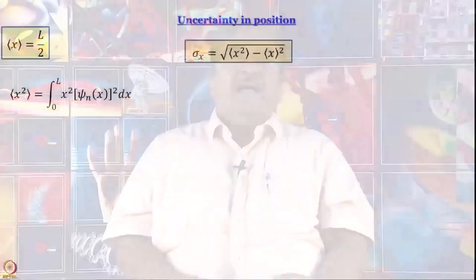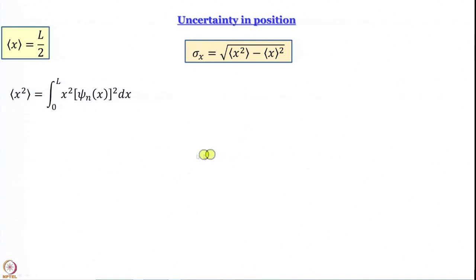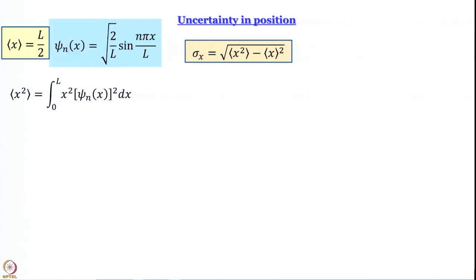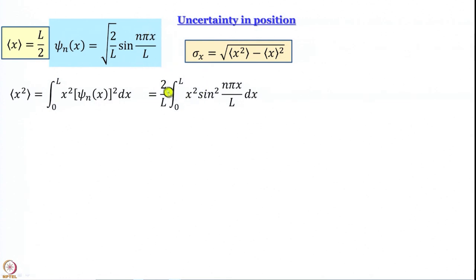So: ⟨x²⟩ = ∫₀ᴸ x² |ψₙ(x)|² dx. Here the operator is simply x², meaning multiply by x². To go further we need the wave function: ψₙ(x) = √(2/L) · sin(nπx/L). Plugging this in, since ψ² gives (2/L), the 2/L comes outside: ⟨x²⟩ = (2/L) ∫₀ᴸ x² sin²(nπx/L) dx.